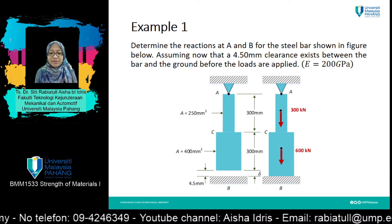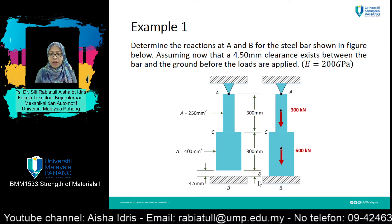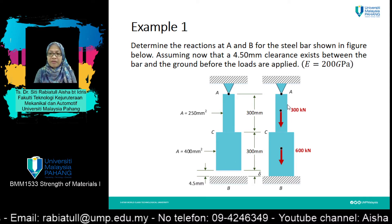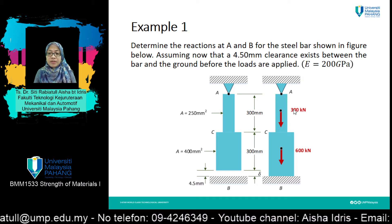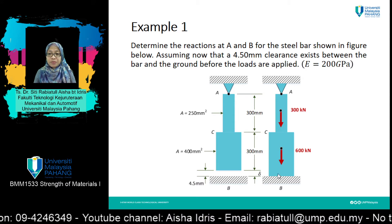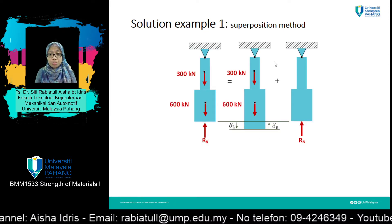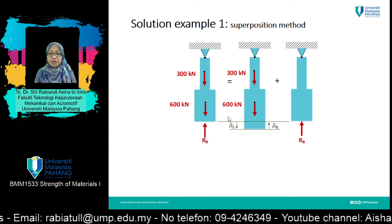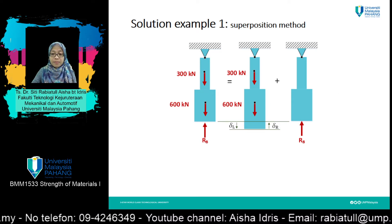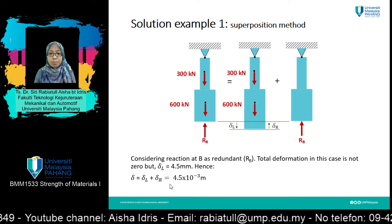How to solve this problem? As usual, first you need to draw a free body diagram. Looking at this figure, this is the structure before the external forces are applied. After the external force of 900 kN is applied, it elongates until point B. The question asks you to find the reaction at A and at B. Applying the superposition method, split it into two: deformation due to actual loading plus deformation caused by redundant load. This gives equation 1: delta equals delta_L plus delta_R equals 4.5 mm.